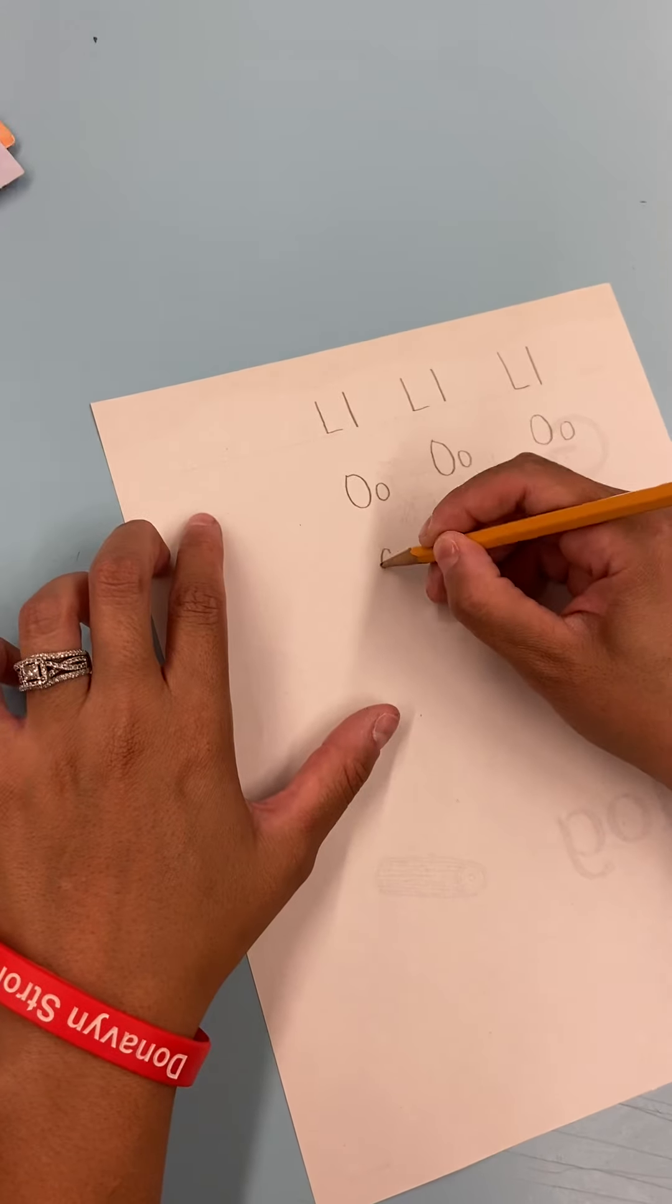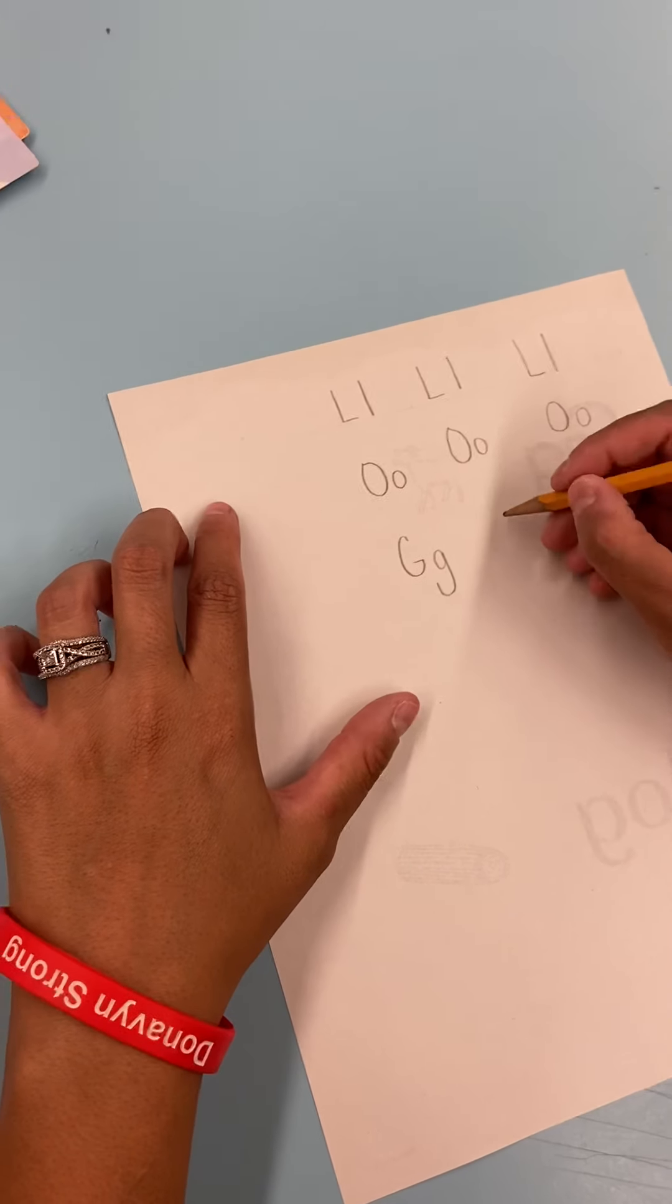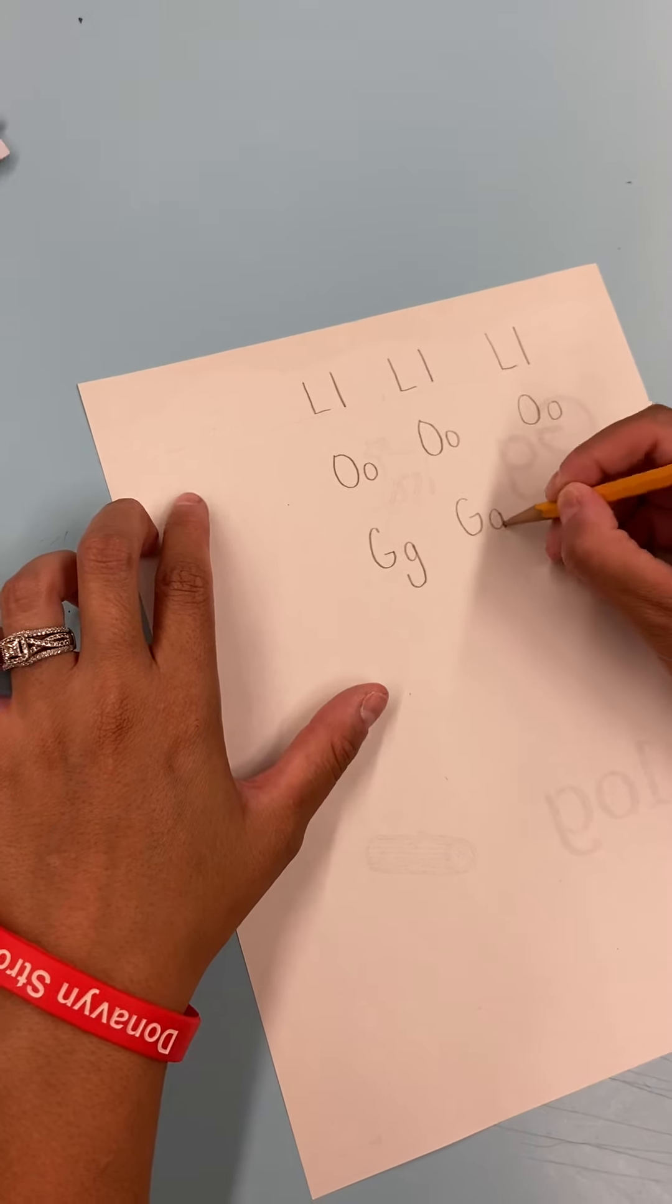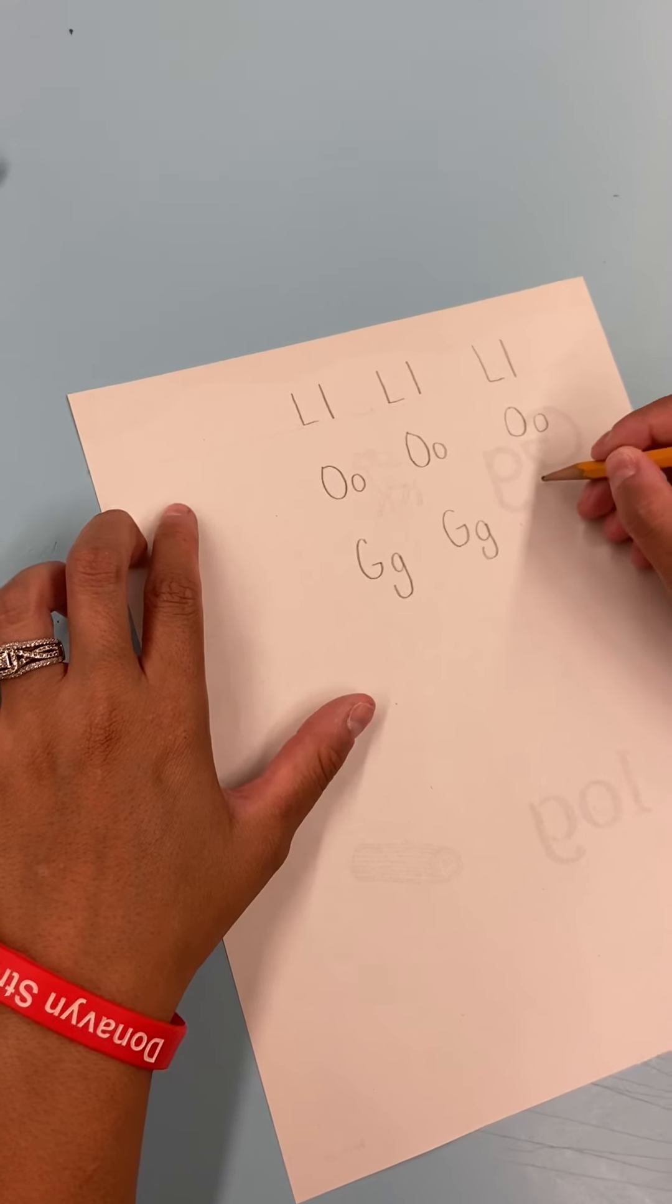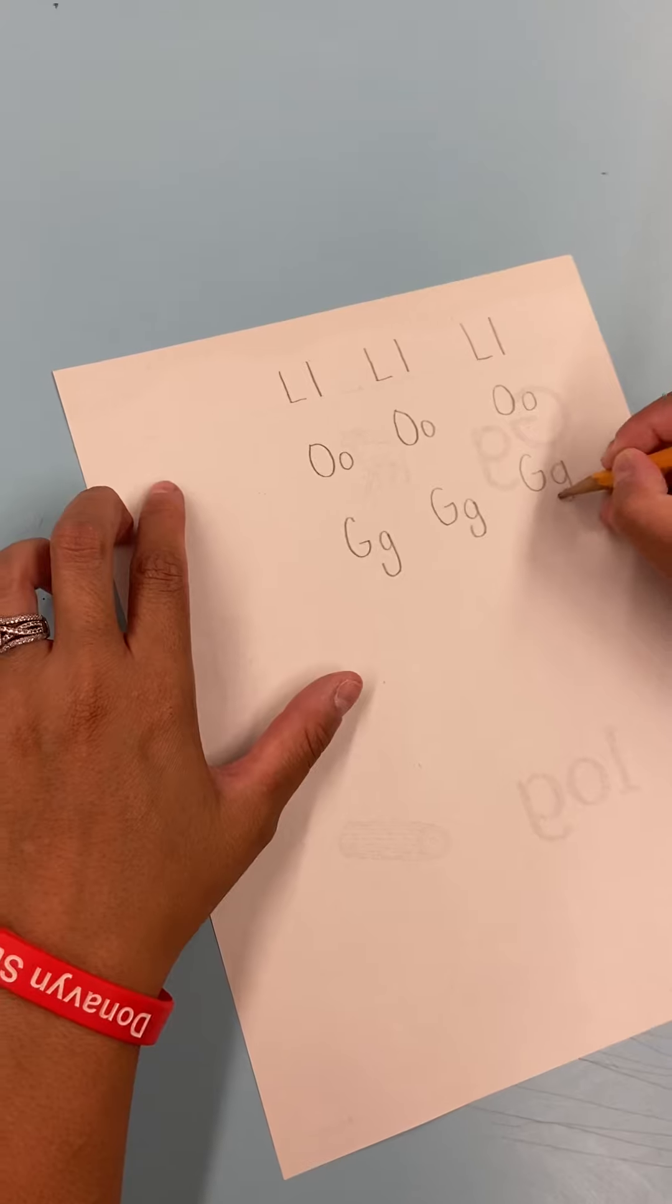And then we're going to write G's. Uppercase G. Lowercase G. G. Uppercase G. Lowercase G. G. Uppercase G. Lowercase G. G.